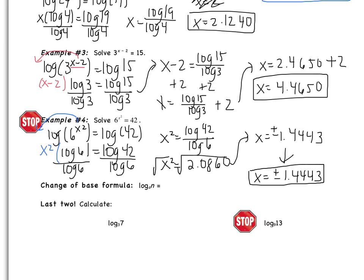So the change of base formula says if I have log base a of n, where a is just some positive number, that's the same as log base b of n over log base b of a. Generally, we take b to be 10. So generally, we're going to take a log where the base is not 10, and we're going to break it up in terms of two logs that are base 10.